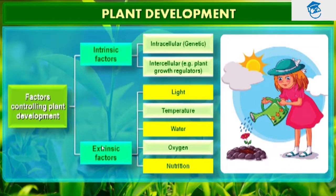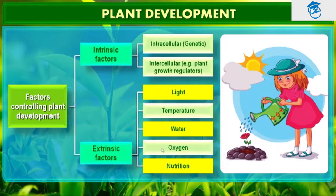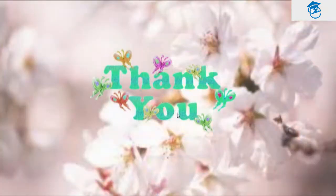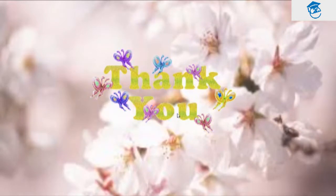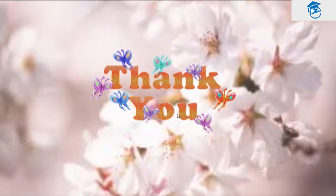The cells derived from the root apical and shoot apical meristem and cambium differentiate and mature to perform a specific function — this leads to maturation, which we call differentiation. The factors controlling plant development are: intracellular (genetic), intercellular (plant growth regulators), light, temperature, water, oxygen, and nutrition. This was all about plant development. In the next section we will discuss plant growth regulators, their characteristics, and discovery.